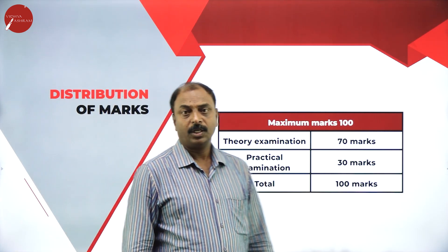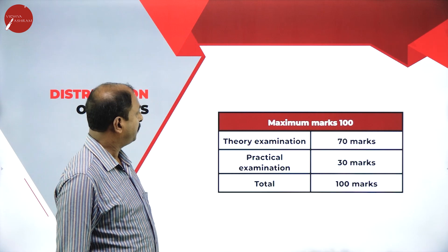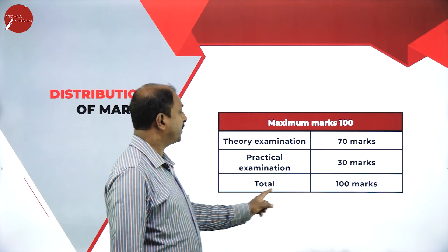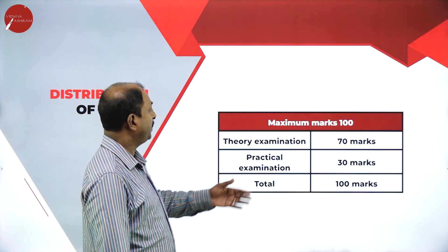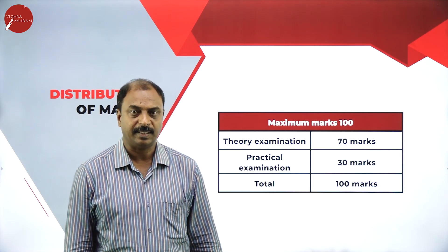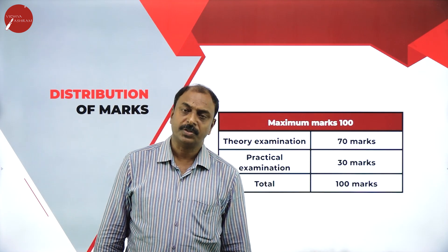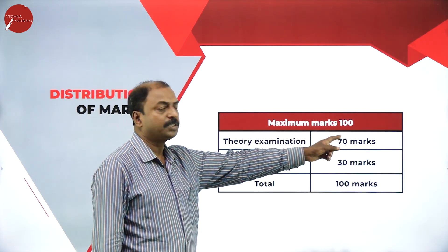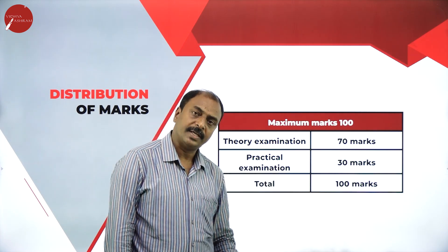The entire paper of Computer Science First PUC is for 100 marks. Theory examination is for 70 marks and practical is for 30 marks. In the theory examination, students must score a minimum of 21 marks to pass, and in the practical, students must score a minimum of 14 marks to clear the examination.